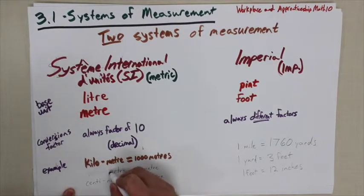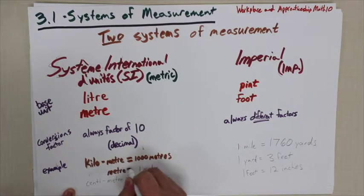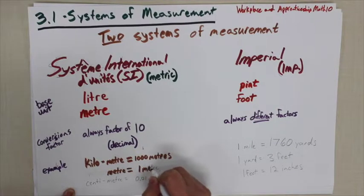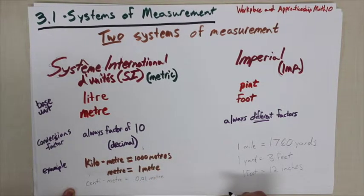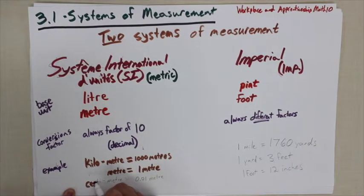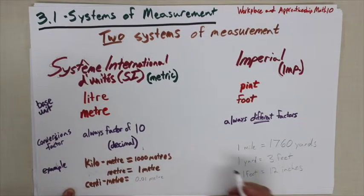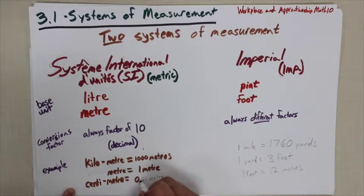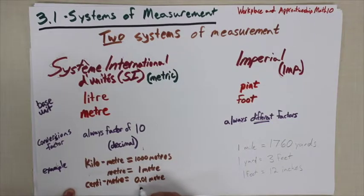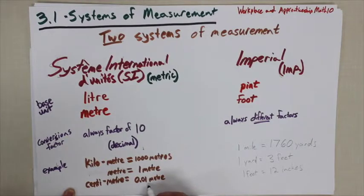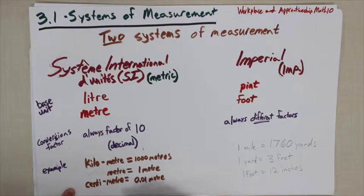If I want to go smaller than a metre, the most common measurement is a centimetre. Each centimetre is 0.01 metre — we've divided by 100 to get 0.01 metre, so one hundredth of a metre is a centimetre. And 100 is 10 times 10, so again it's a factor of 10.